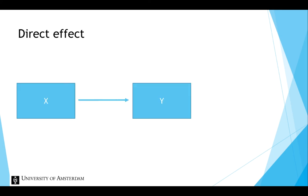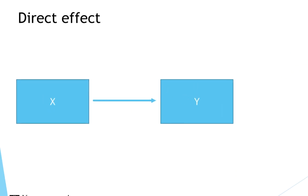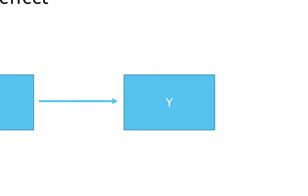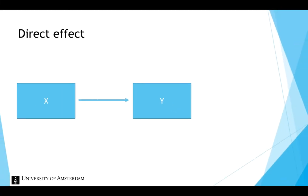The first type of causal relationship is a direct effect. In this example, x has a direct effect on y. There is a single straight arrow pointing from x to y. For example, hours of study has a positive direct effect on grade.